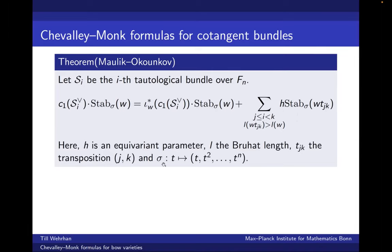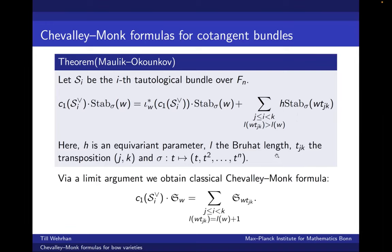For this formula to hold, we choose our cocharacter to be the basic choice t maps to (t, t^2, ...). As I said, the stable envelope classes degenerate to the Schubert classes. Therefore, this limit gives us back the classical Chevalley-Monk formula in Schubert calculus, which describes the Chern class multiplication of tautological bundles with respect to the Schubert basis. The key difference in this formula is that in the Schubert world the length must increase by exactly one, whereas in the stable envelope world the length only needs to increase. We can view this theorem as a generalization of the Chevalley-Monk formula to the cotangent bundles of flag varieties.